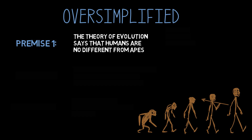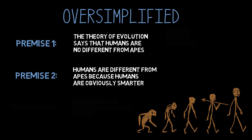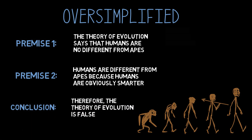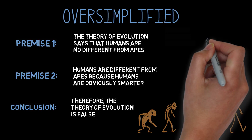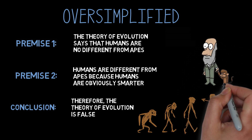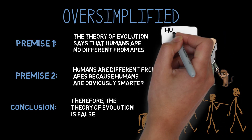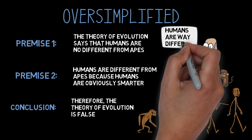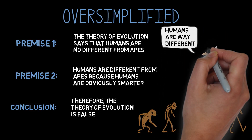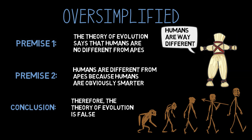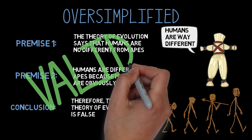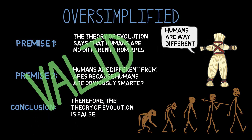Premise 1: The theory of evolution says that humans are no different from apes. Premise 2: Humans are different from apes because humans are obviously smarter. Conclusion: Therefore, the theory of evolution is false. Is this a good argument? Clearly not, since the theory of evolution does not claim that humans are no different from apes. Gio has falsely characterized what the theory of evolution says and then proceeded to attack it — he has committed the strawman fallacy. But it's worth noting that the structure of his argument is valid, so for anyone not familiar with evolutionary theory, it might seem as if Gio has provided a good argument against evolution.